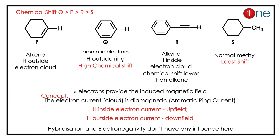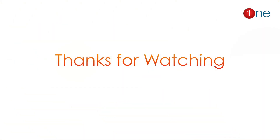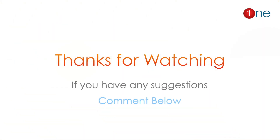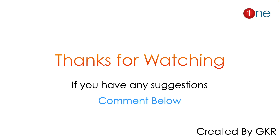The key concept to learn here is whether the hydrogen is inside the ring current or outside the ring current. Inside the ring current means low chemical shift; outside the ring current means higher chemical shift. That's all from this video — thanks for watching.